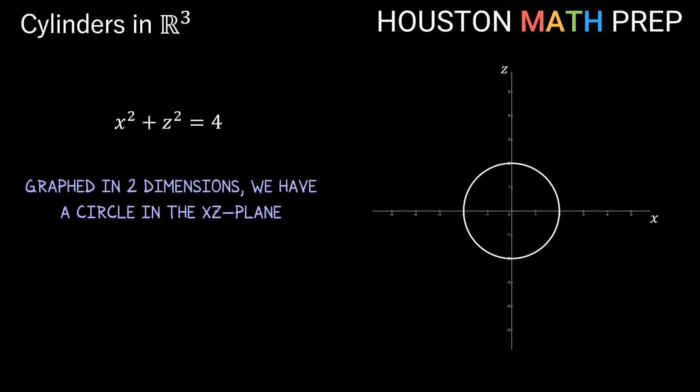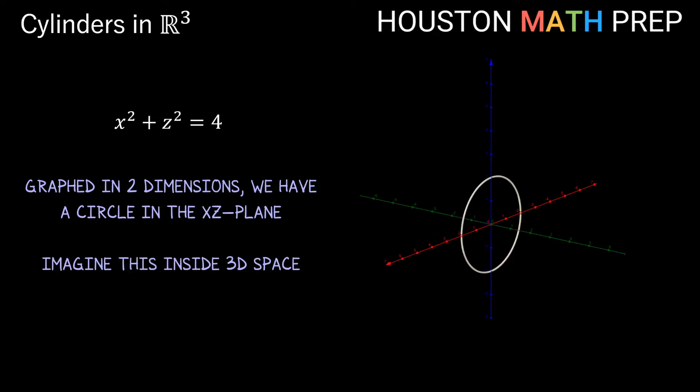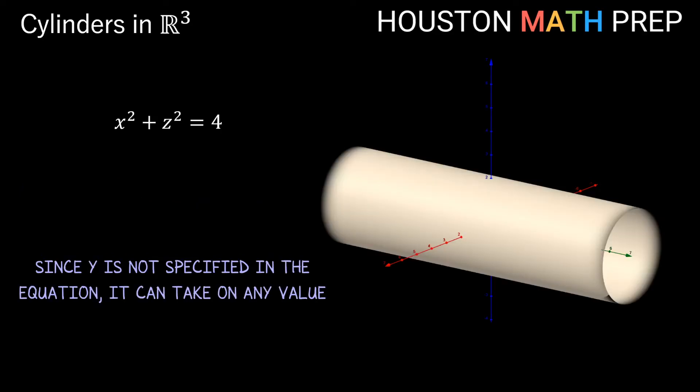Now doing a similar thing to what we did with our parabola, if we imagine our circle in the 2D xz plane inside of three-dimensional space and we notice that in this equation there are no conditions or restrictions on y, since y is not specified, then this circular shape is allowed to extend freely in the y direction here.